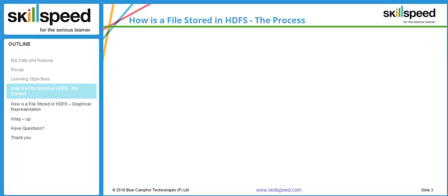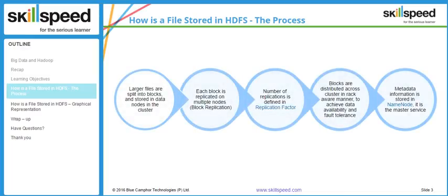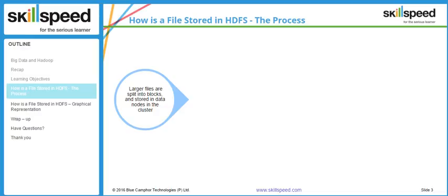Since we have learned our basics about HDFS — things such as block size, replication factor and rack awareness — let's now put together all these pieces and see how a file is stored in HDFS. In this particular slide, we have shown you the pictorial representation of the same. In the next slide, we will take an example and show the process in detail. When a file is getting stored in HDFS, the first concept to understand is that any large file will get divided into blocks, and then only the file will be moved to HDFS.